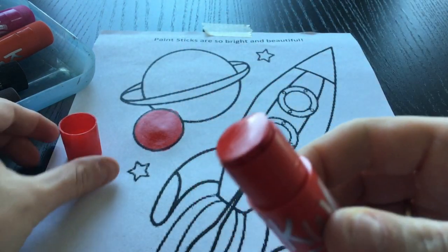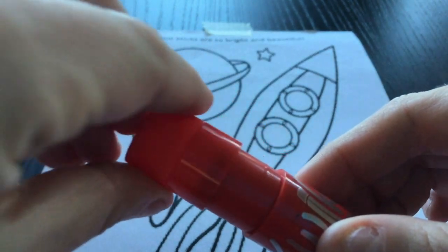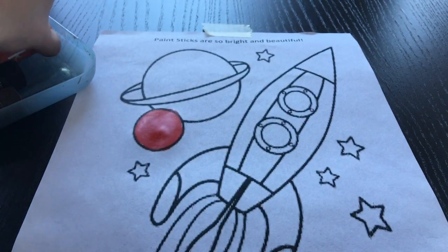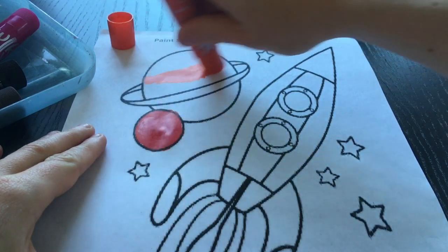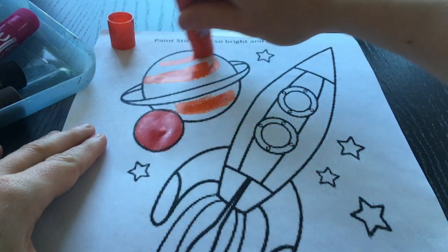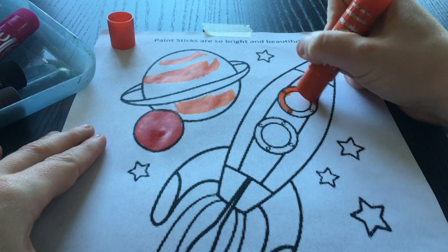When you're done using a color, you have to make sure that you put the cap on, and look how I lined it up with this before I listen for the click. If we don't close them properly, then they will dry out, and we'll be so sad because these are so bright and beautiful, and we want them to last all year long. So make sure that you are doing your best to put those caps on tight.